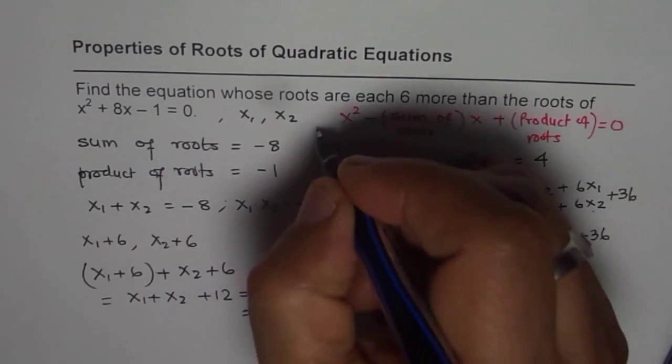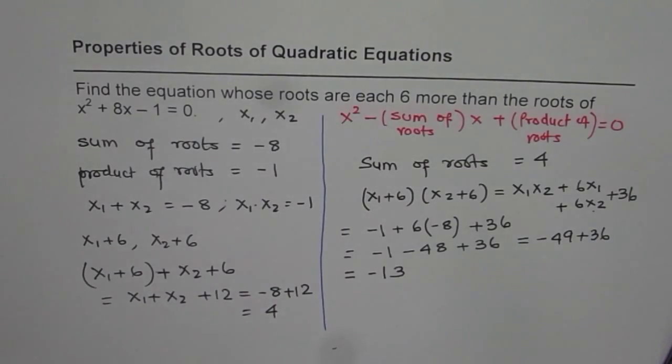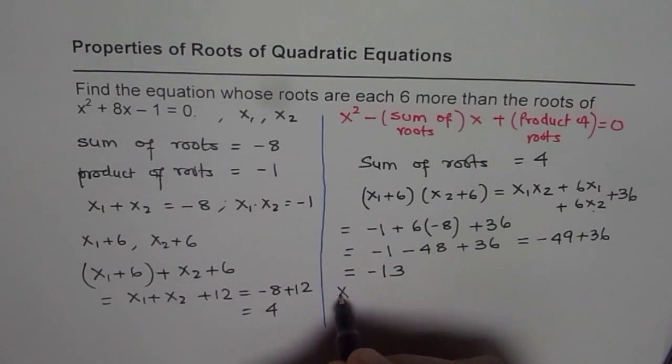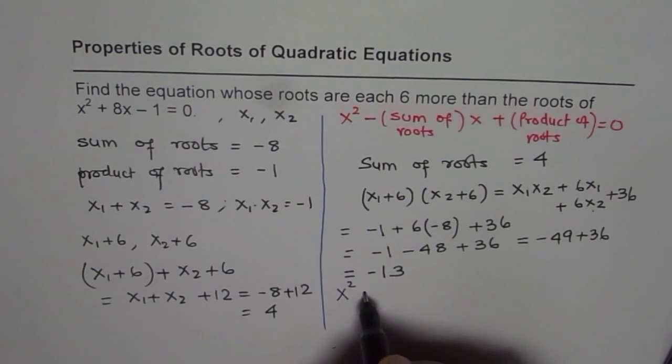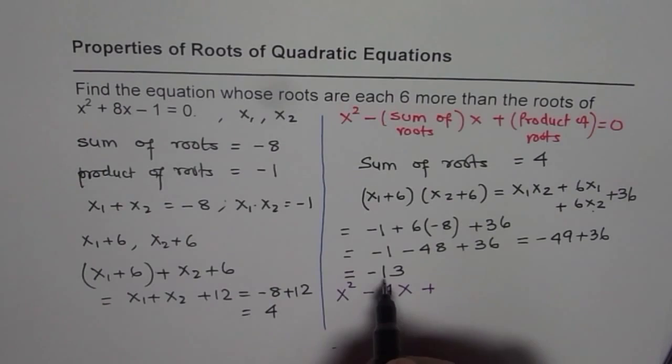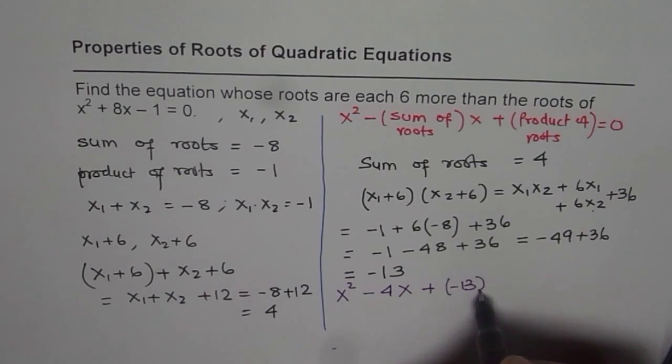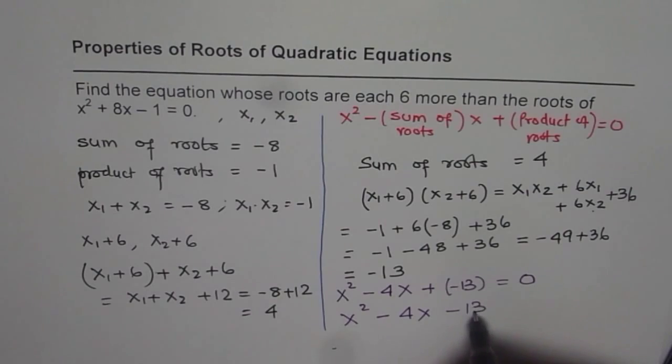The quadratic equation which we are looking for is x² - (sum)x + (product). Sum is 4, so it is x² - 4x + (-13) = 0. So the answer is x² - 4x - 13 = 0.